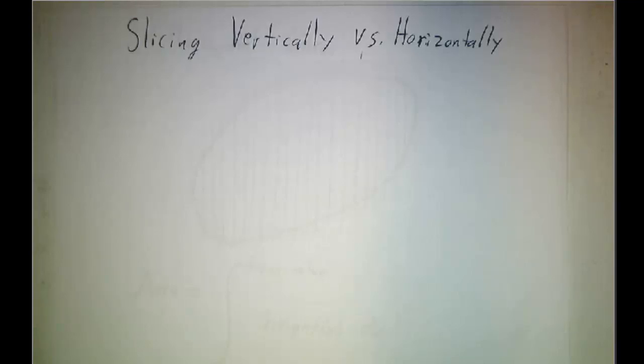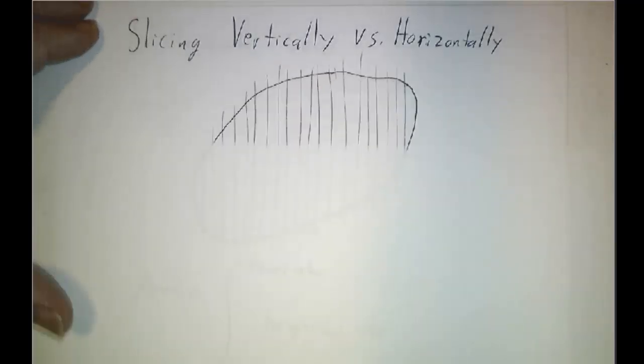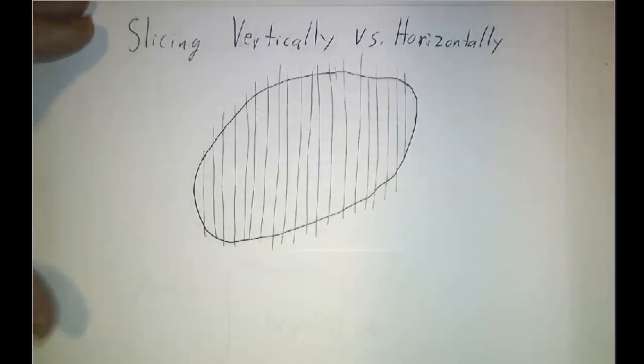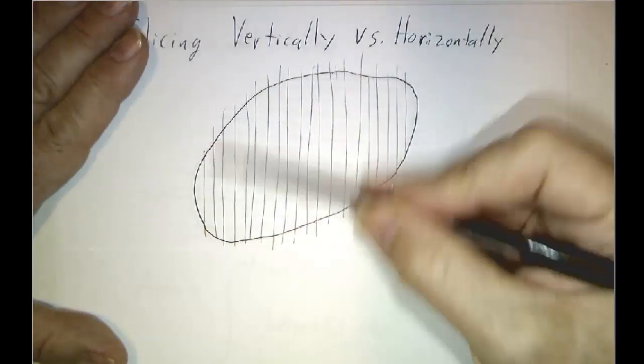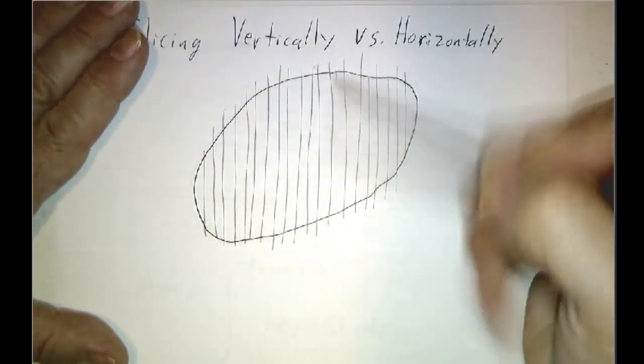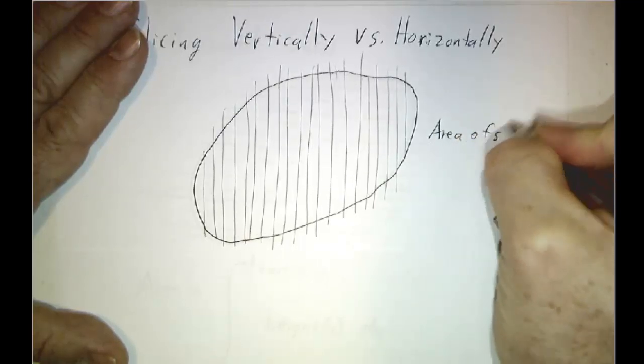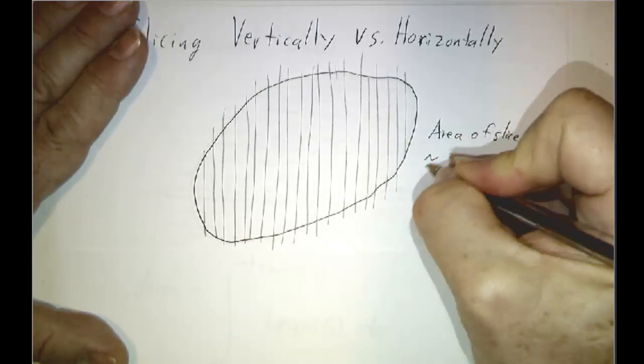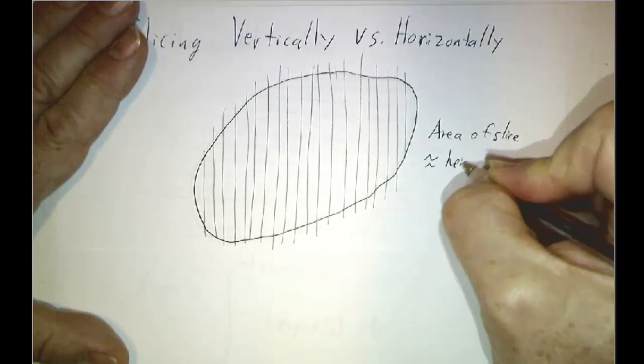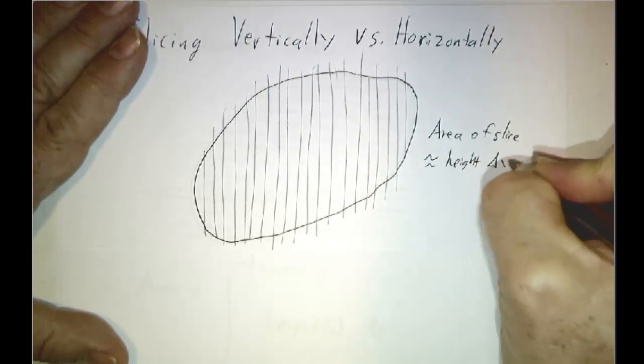In the last couple of videos, we've developed a technique for figuring out areas of regions in the plane. So if somebody gives us a region in the plane, typically it's the area between a couple of curves, but it could be any region in the plane. Our technique is to take it and break it up into a whole bunch of vertical slices, and then we say that the area of each slice is approximately its height times its width.